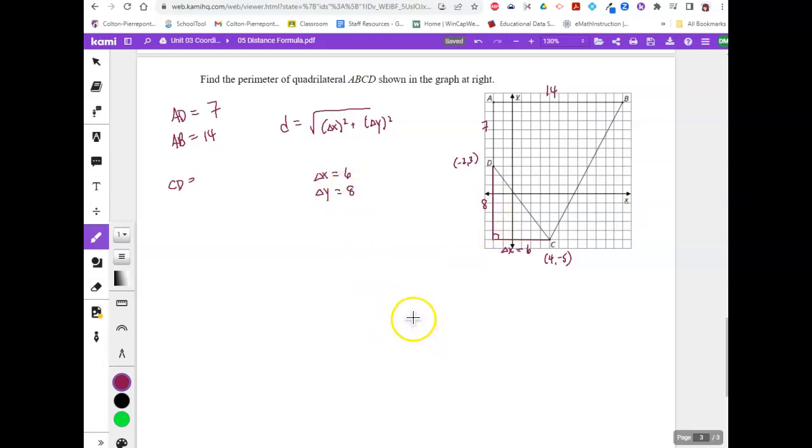Now, the vertical distance, if we look at the coordinates, we go from 3 to negative 5, is a change of negative 8. But the change is going to be squared anyway, so the change is actually going to be 8. Now, we want to plug in the formula. Delta X is going to be 6. Delta Y is going to be 8. So that means this is going to be 36 plus 64, which is 100. So that means that CD is going to be the square root of 100, which is going to be 10. So this side right here is going to be 10.